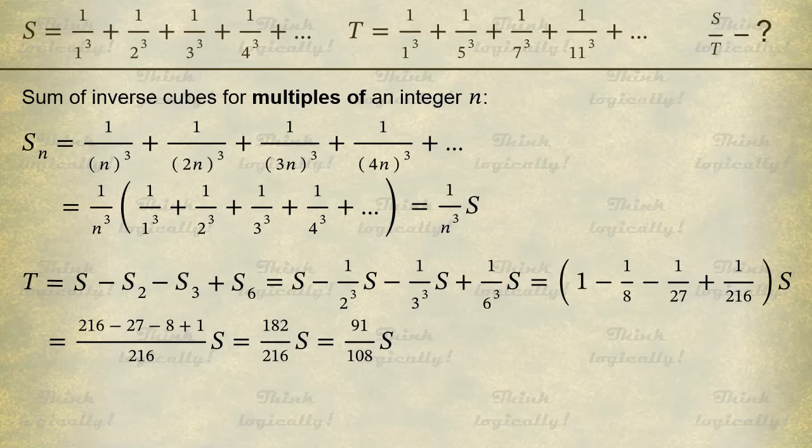Again, the ratio S to T is 108 over 91. So we've got the same answer as previously. The only difference is that now it's the end.